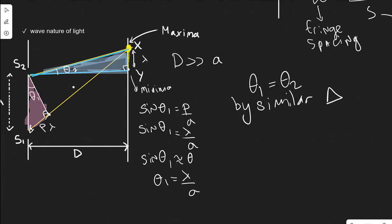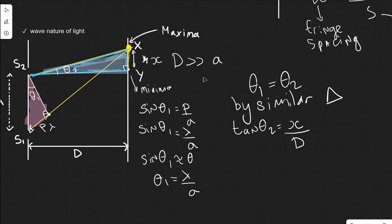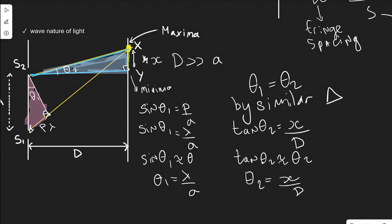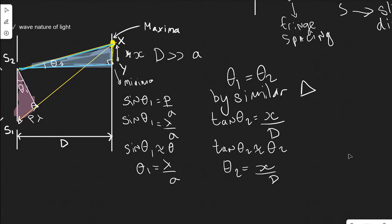Considering the tangent of theta 2: tan of theta 2 equals the opposite, which is X — the fringe separation — divided by the adjacent, which is D. With the small angle approximation, tan theta is also approximately equal to theta, so theta 2 equals X over D. But theta 1 equals theta 2 by similar triangles, so we can combine the two equations: lambda over A equals X over D.